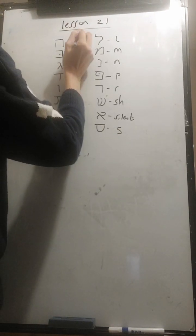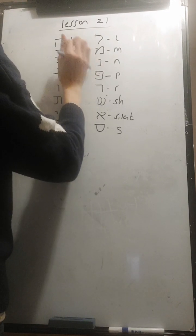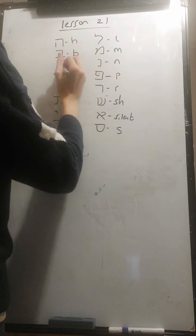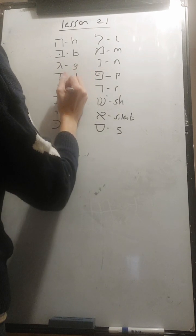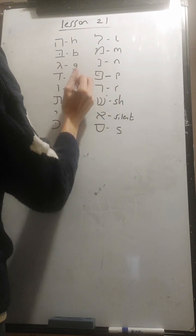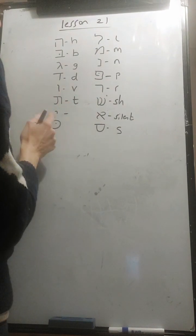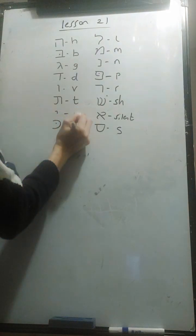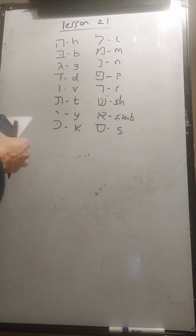The he sounds as H. Bet sounds as B. Gimel sounds as G. Dalet sounds as D. Vav sounds as V. Tet sounds as T. Yud sounds as Y. And kaph sounds as K. So there are all the Hebrew letters we've learned.